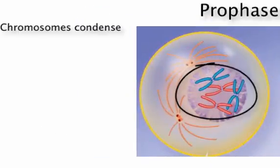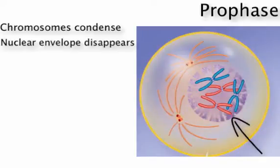During prophase, the chromosomes condense and shorten. The nuclear envelope disintegrates and disappears.